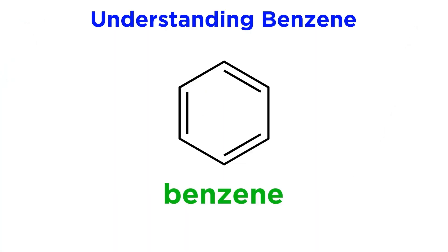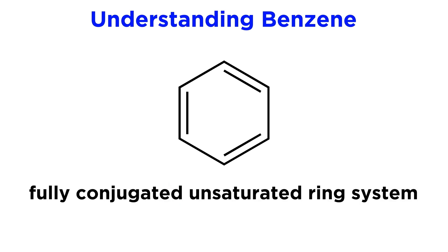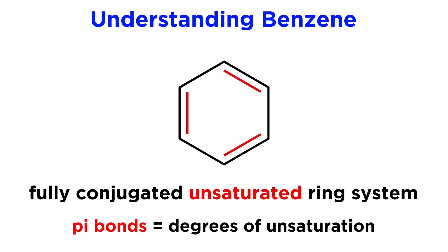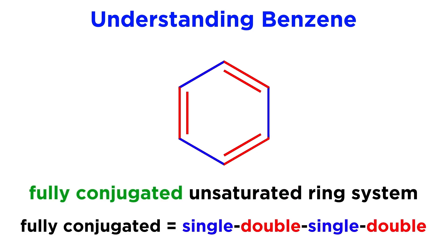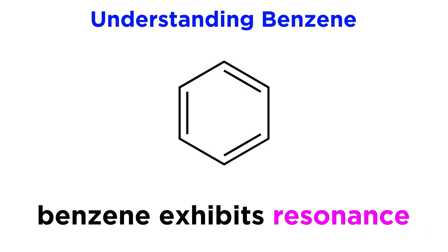The most common aromatic compound is benzene. This is a cyclic triene. When we say aromatic compounds have a fully conjugated unsaturated ring system, this is what we meant. The pi bonds are degrees of unsaturation and they are fully conjugated. We are alternating single bond and double bond all the way around the ring. The reason this is important will become clear if we look at the two possible resonance structures.